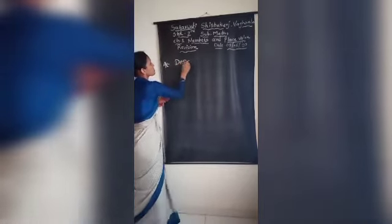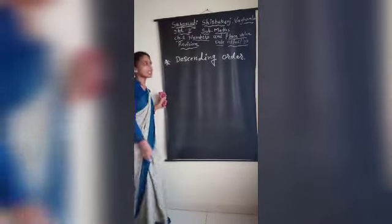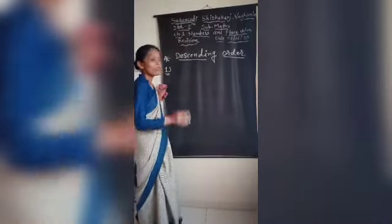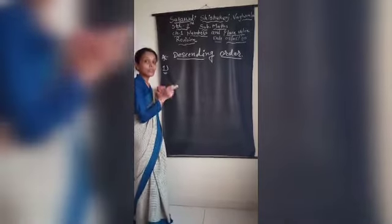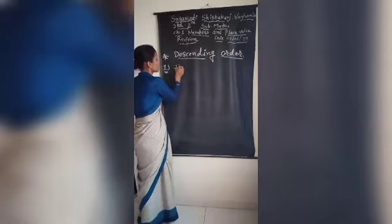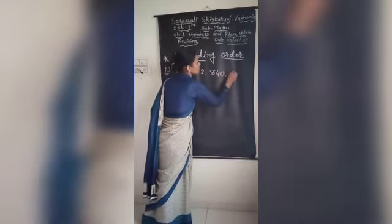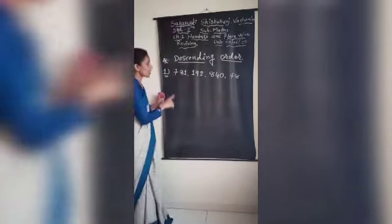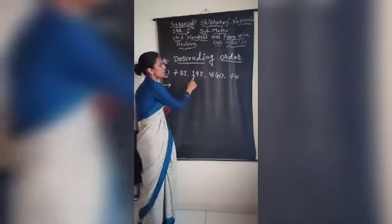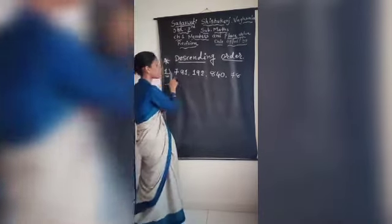Now the next topic is descending order. In descending order, you have to first write the bigger number — you go from bigger to smaller. Let's take one example: 781, 192, 840, and 78. Note that 78 is a two-digit number and the rest are three-digit numbers — keep this in mind.